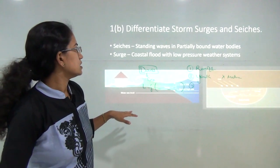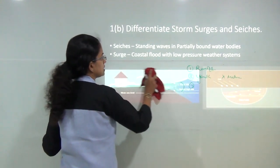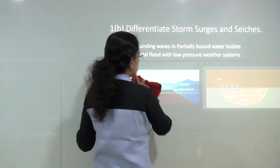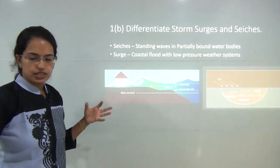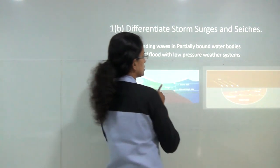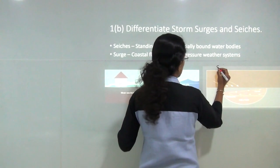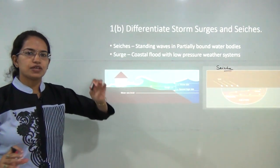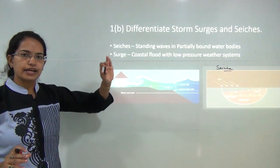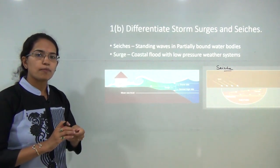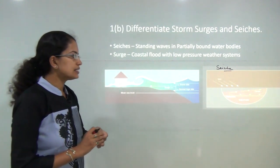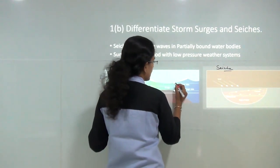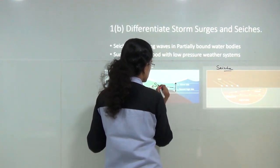The next question is to differentiate storm surge and seiches. Seiches occur in a partially bound water system where standing waves are formed. When talking about surge, you have a normal high tide, but when a strong high tide occurs that is much higher than normal, that is known as a surge.